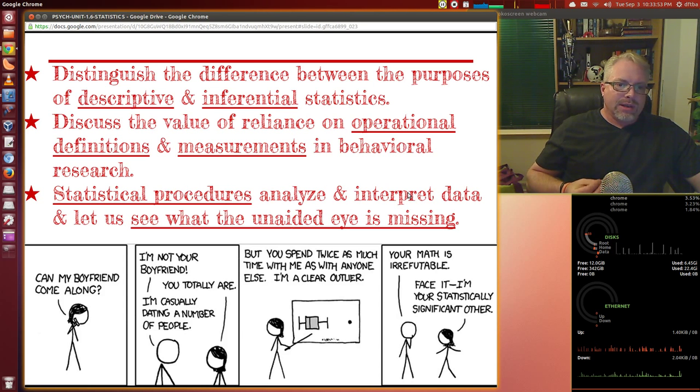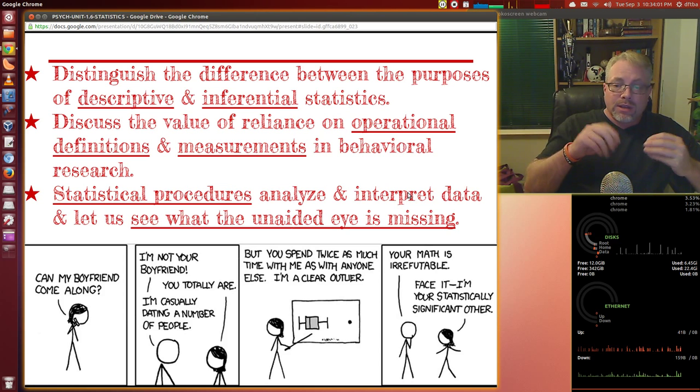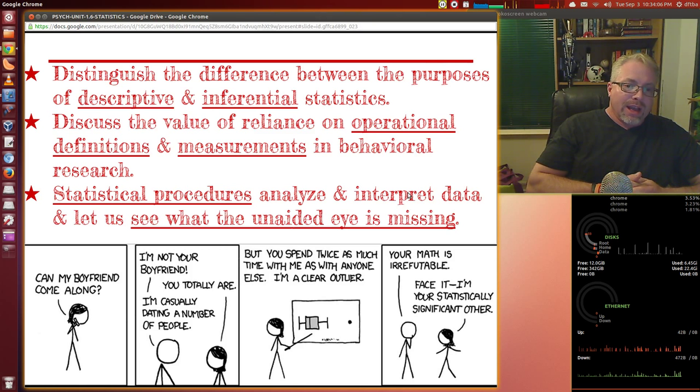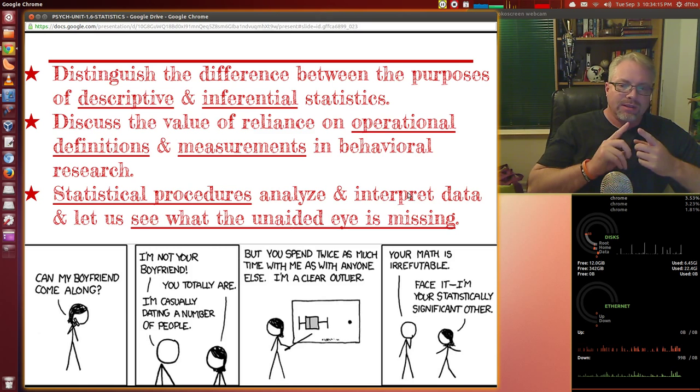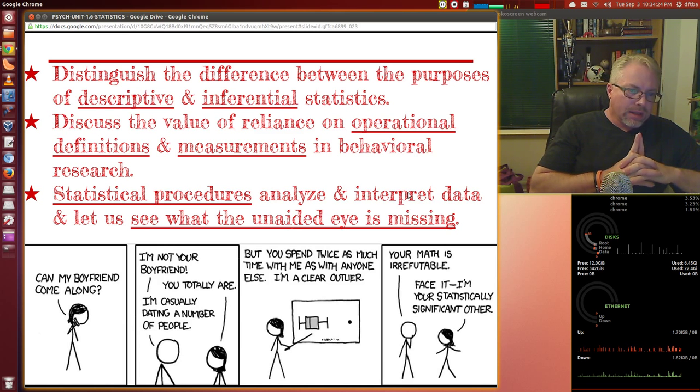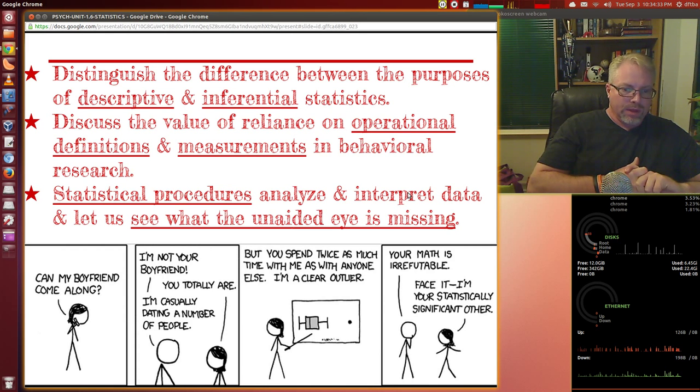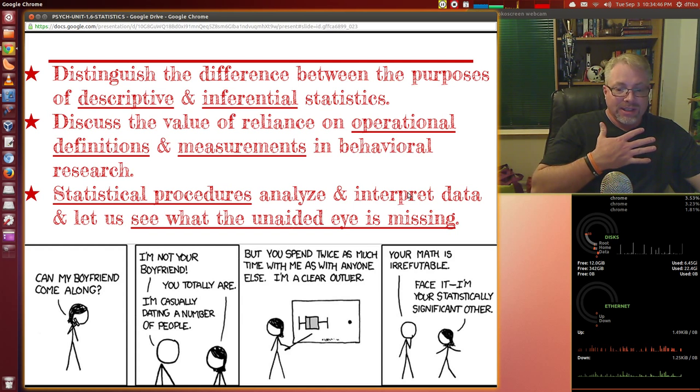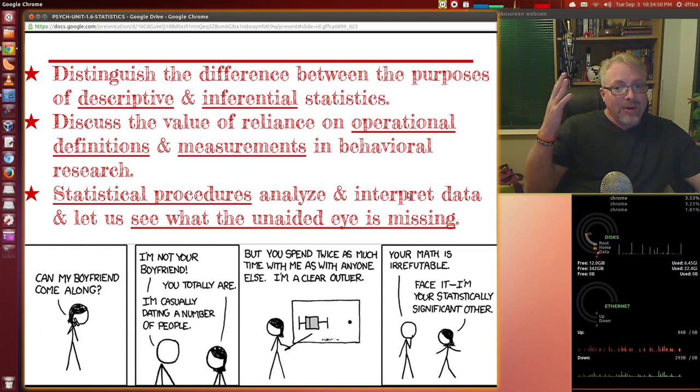What are we doing with numbers? We're looking to distinguish the difference between the purposes of descriptive and inferential statistics. We're going to discuss the value of reliance on operational definitions and measurements in behavioral research. Measurements are where we're going to look at here a little bit. Statistical procedures analyze and interpret data and let us see what the unaided eye is missing. A good example is this cartoon where she convinces him, face it, I am your statistically significant other. He may not know it, but he has a girlfriend. And she's been able to prove that to him. He says your math is irrefutable.